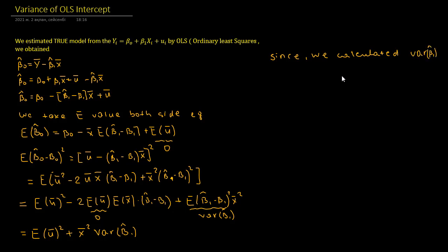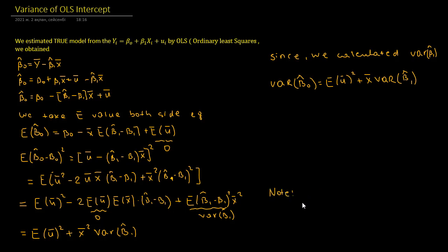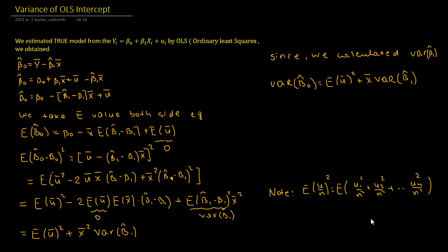Since we calculated the variance of beta 1 hat in previous videos, we plug it into our equation. The variance of beta 0 hat equals the expected value of u bar squared plus x bar squared times the variance of beta 1 hat. Note that u bar equals the sum of u i divided by n, so u bar squared expands to: u 1 over n squared plus u 2 squared over n squared, continuing up to u n squared over n squared.